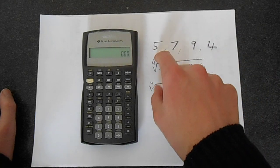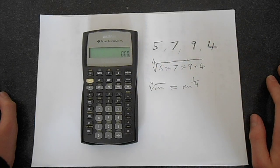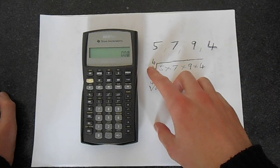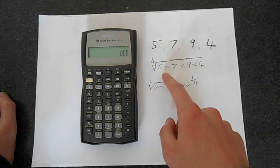Okay, so in this example, we're going to take 5, 7, 9, and 4, and when we find the geometric mean, we just take the root corresponding to the number of numbers, and we take the product of those numbers.